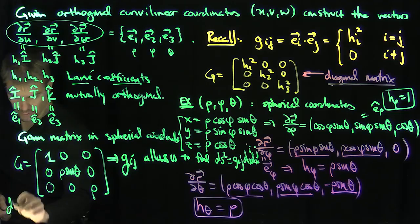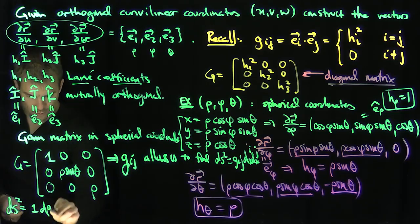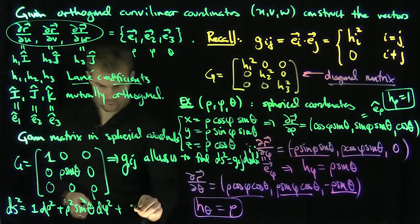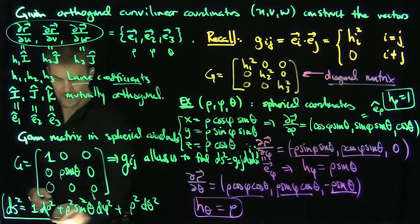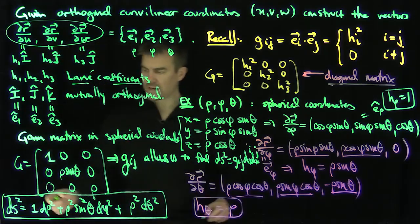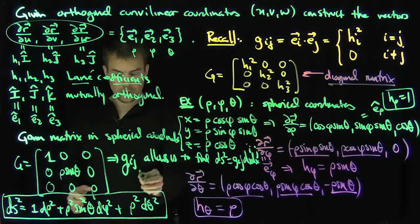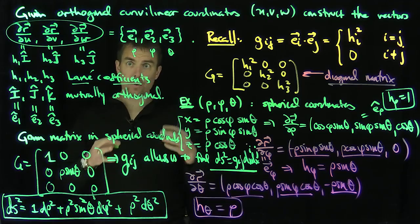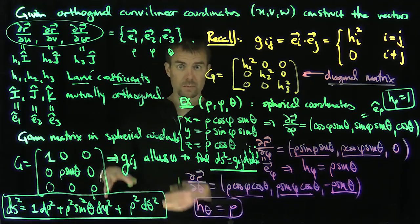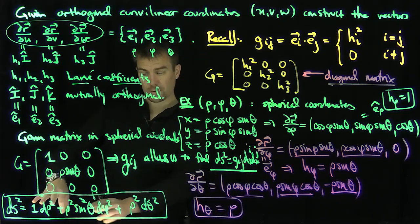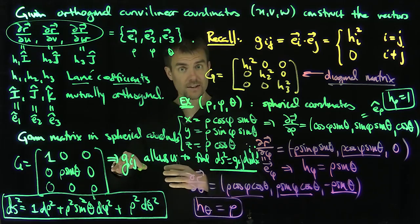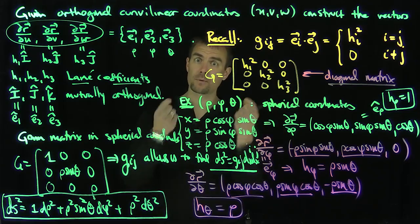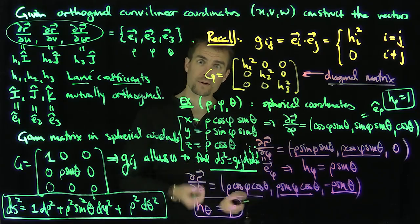In spherical coordinates, the arc length element is dS² = d rho² + rho² sin²theta d phi² + rho² d theta². This dS² is a scalar quantity computed by summing over i and j, allowing us to compute lengths. In further videos we'll exploit this metric structure to compute lengths and find geodesics using the variational principle — the Euler-Lagrange equations — but it all boils down to this basic structure of the metric tensor, enabling us to compute dot products between two vectors in orthogonal curvilinear coordinates. Thank you very much.